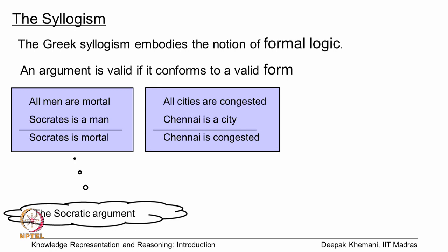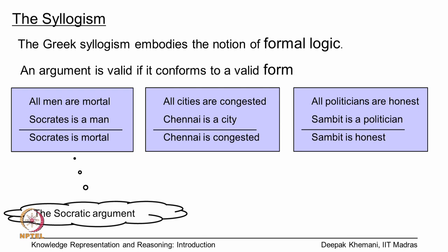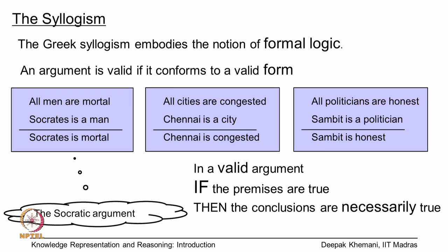Other examples are: all cities are congested, Chennai is a city, therefore Chennai is congested; or all politicians are honest, Sambet is a politician, therefore Sambet is honest. You will notice that the three arguments have the same form, and it is the form that we are interested in. We say that if the premises you give us are true, then the conclusion will necessarily be true.